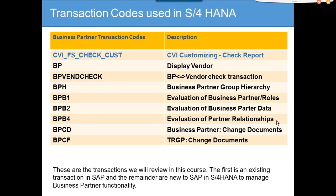The second transaction is BP, which you need for everything — displaying vendors, customers, and business partners. As discussed before, every vendor or customer you create needs to be attached to a business partner. That's the first thumb rule in S4 HANA and you have to follow this.